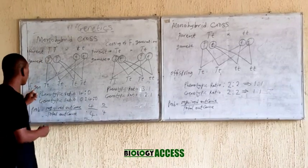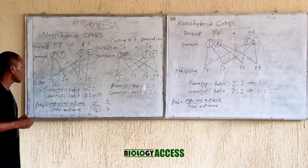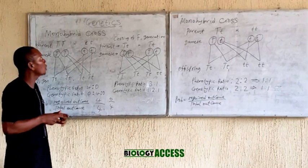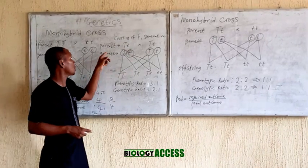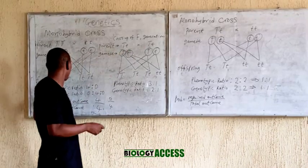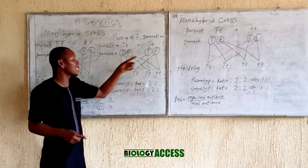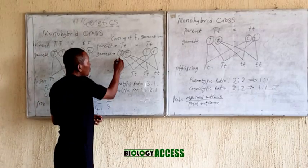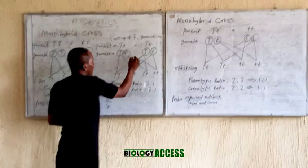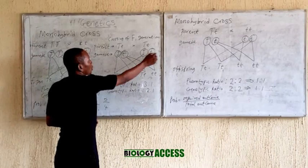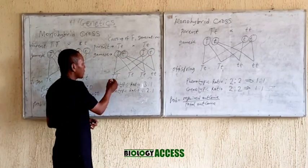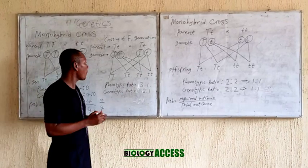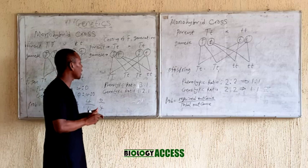So we can now cross the F1 generation to get the second filial generation — F2. The F1 individuals become the parents. We get the gametes as usual, as shown in my previous video, and then carry out the same crossing procedure: this crosses with this, and this crosses with this, giving us four outcomes.